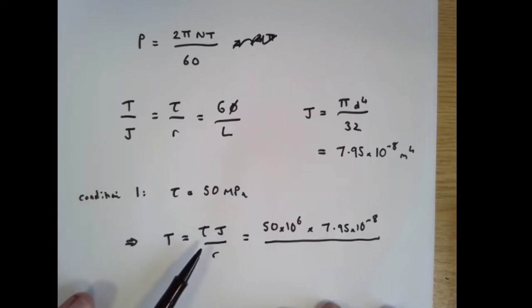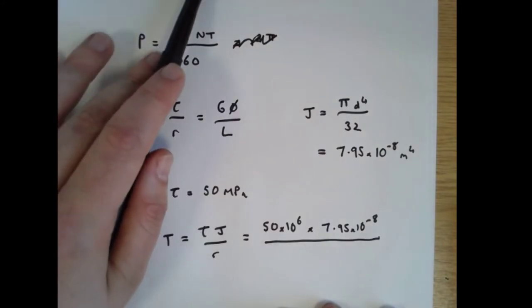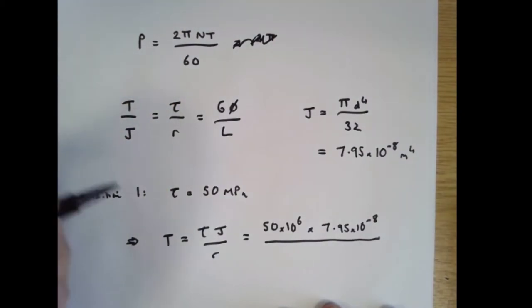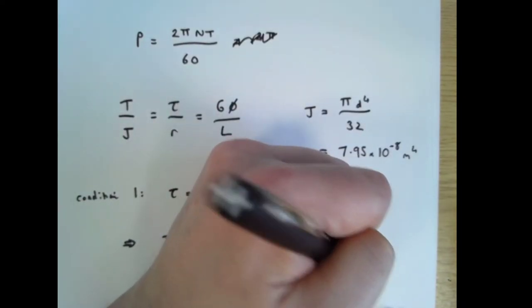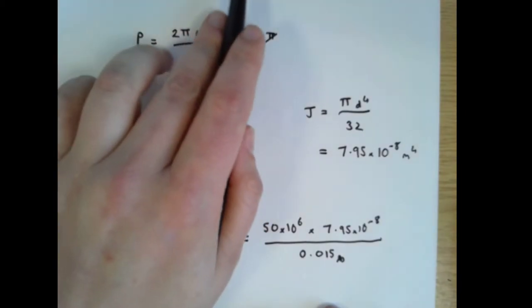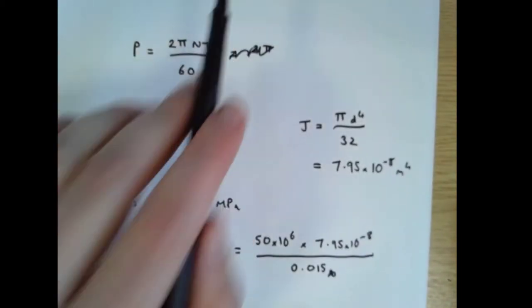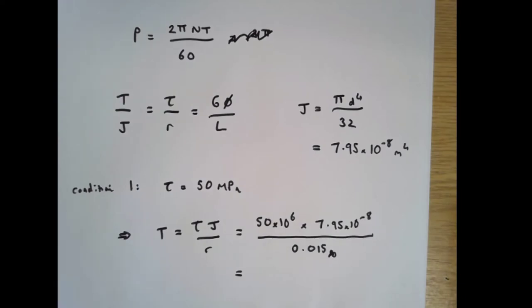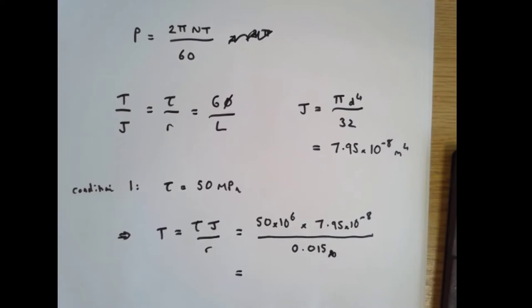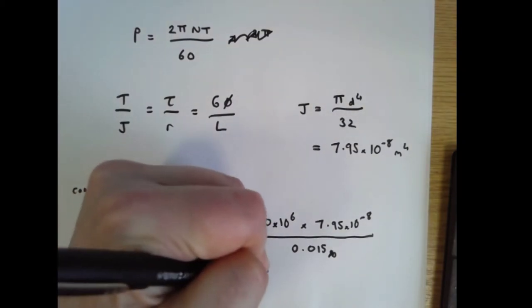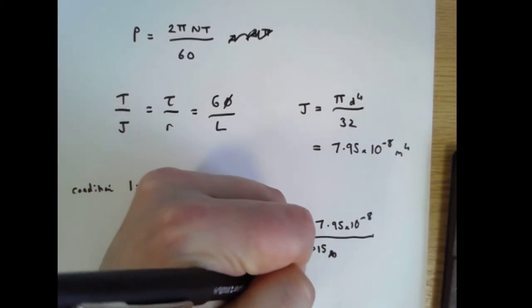The highest value of shear stress, what we're really worried about is that the shaft might break if the shear stress gets too high. The highest value of shear stress will always be at the outside of the shaft, so we're interested in the radius of the outside of the shaft which is 0.015 meters. That's half of this 0.03. So that is 50 times 10 to the 6 times 7.95 times 10 to the minus 8 divided by 0.015 is 265 newton meters.